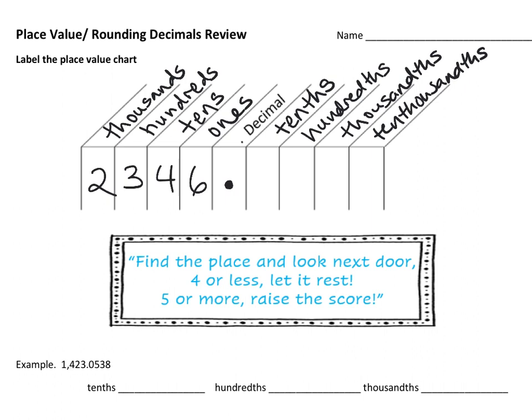So if we had a number like 2,346.3528, we have three in the tenths spot, five in the hundredths spot, two in the thousandths spot, and eight in the ten thousandths spot. It's a bit of a mouthful because you have to add the T-H-S at the end to indicate decimals.